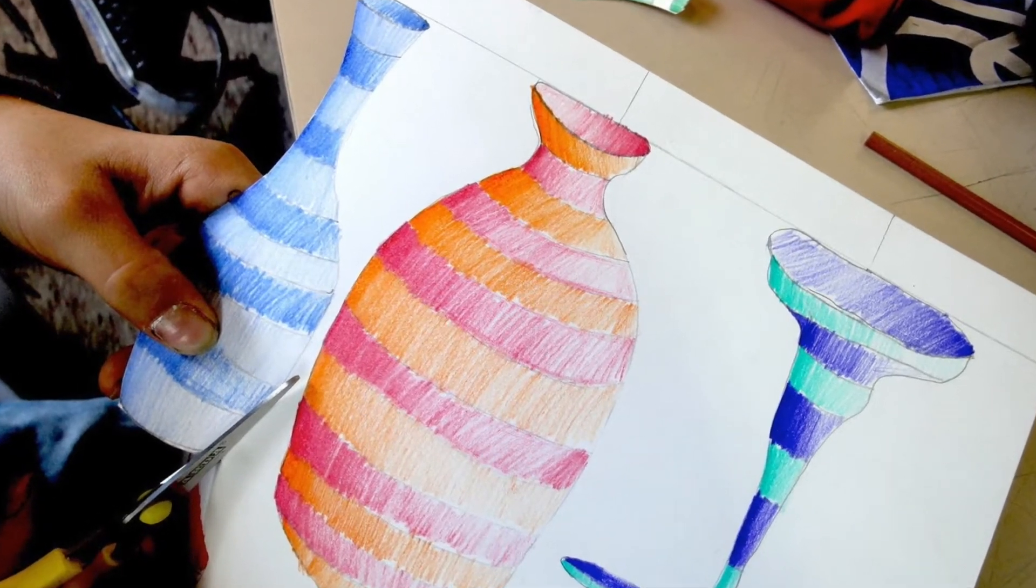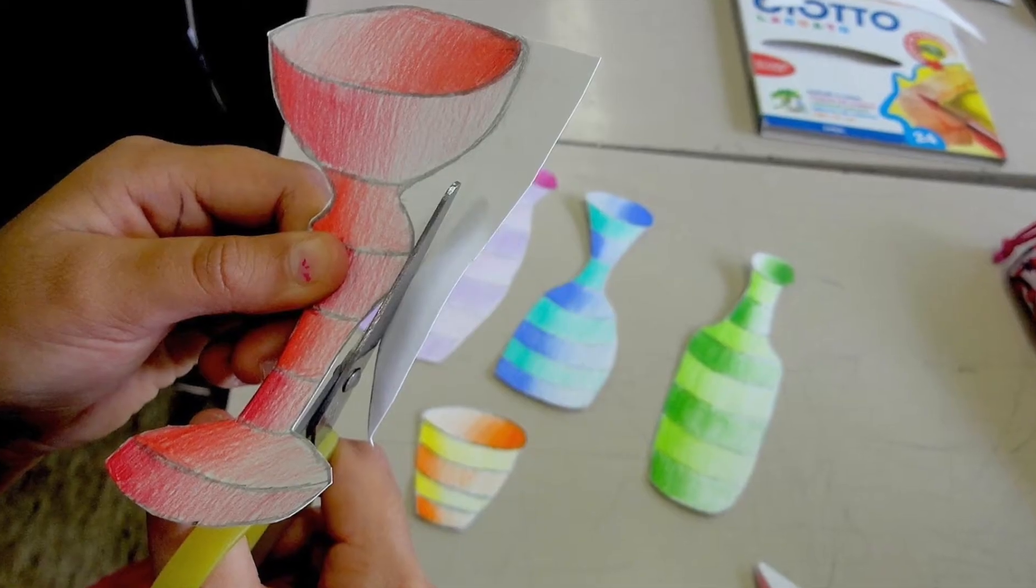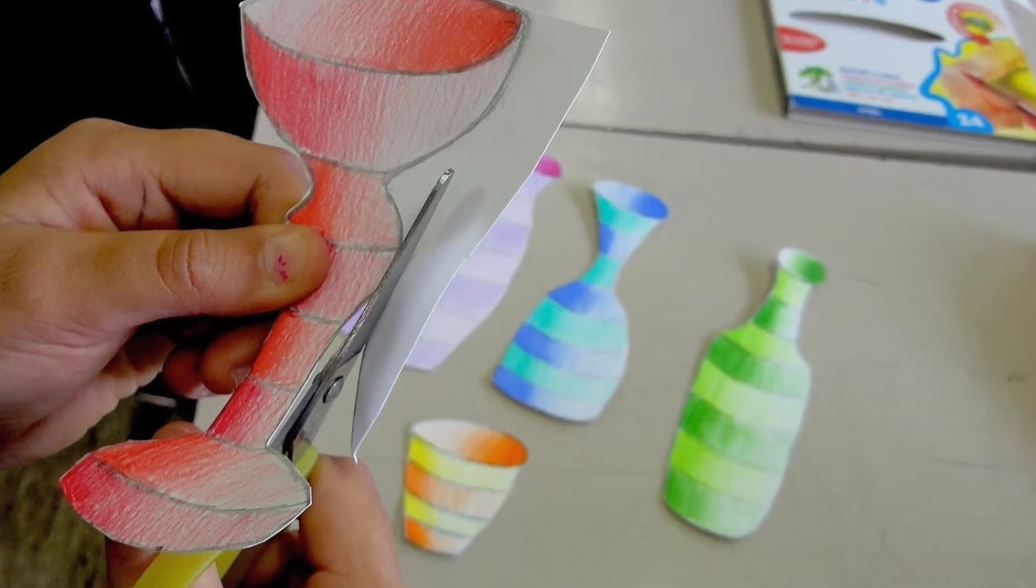Now it's time to cut out your forms. Use scissors and carefully cut around the edge of each form. It's okay if you make a couple little mistakes here or there.